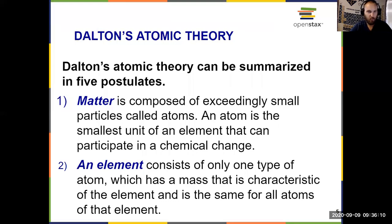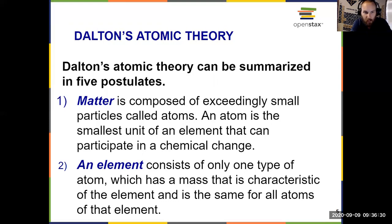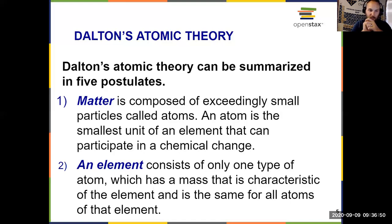Here are the first two postulates of Dalton's atomic theory. Postulate one: matter is composed of exceedingly small particles called atoms. The atom is the smallest unit of an element that can participate in a chemical change — and that is the key idea, participate in a chemical change, because we're not talking about things like protons, neutrons, and electrons. Postulate two: an element consists of only one type of atom. Anything on the periodic table is just made up of one type of atom, and everything in there has a mass that's characteristic of the element — the same for all atoms of that element.